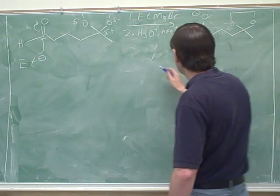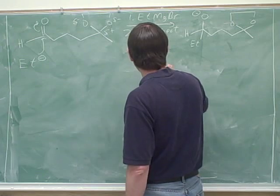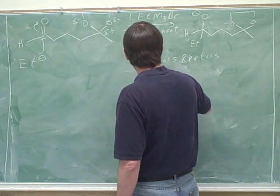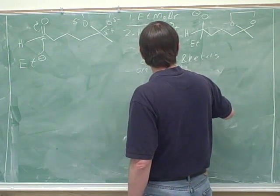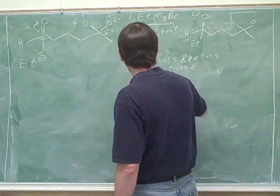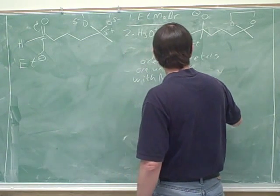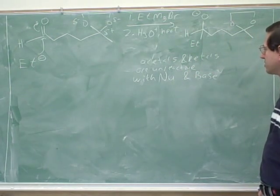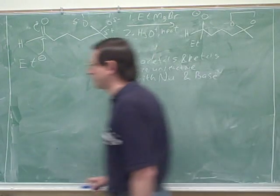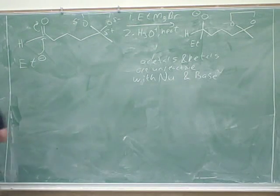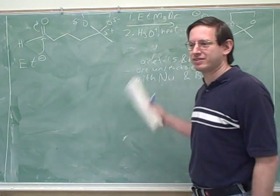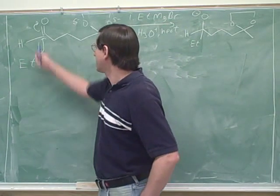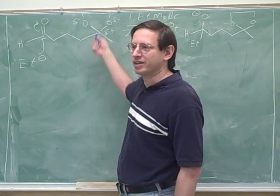Ketals are unreactive with nucleophiles and bases. That's why this is a protecting group. This is protected from reacting with nucleophiles and bases. Well, this is a nucleophile, so it's not going to react with this. As an aside, that's how we know that this is an attack of carbonyl and not this hidden carbonyl over here.